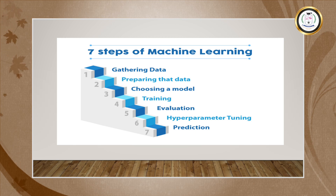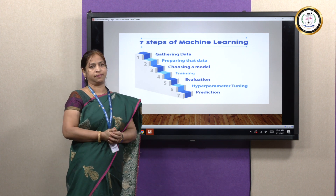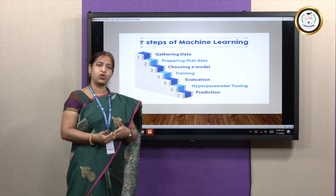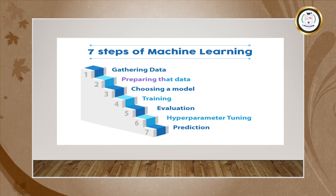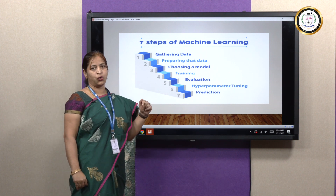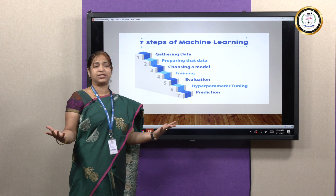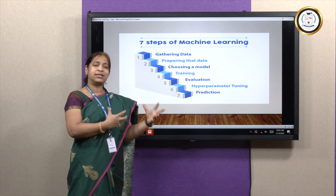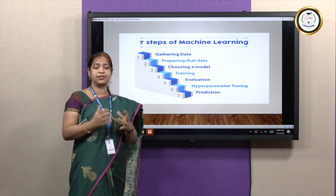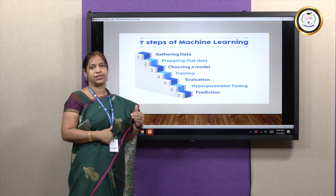Let us see the seven steps involved in any machine learning project. First of all, we need to gather the data — maybe real-time data through sensors or data available online. The next step is to prepare the data for prediction or for any model, so we have to undergo pre-processing techniques. For example, while doing a recipe, we buy ingredients but we do not cook them as-is — we clean and grind them. Similarly, we have to pre-process the data for our model.